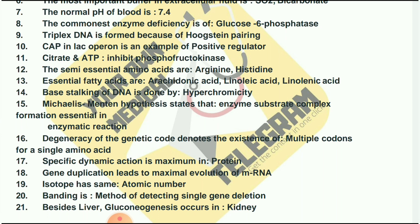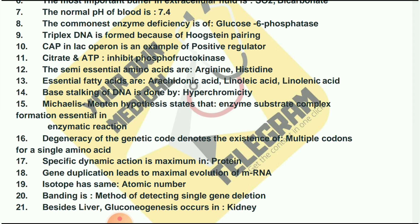Specific dynamic action is maximum in protein. Gene duplication leads to maximal evolution of mRNA. Banding is the method of detecting single gene deletion. Besides the liver, gluconeogenesis also occurs in the kidney.